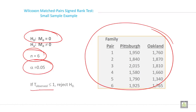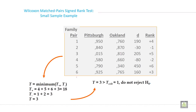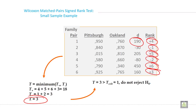So if T-observed is less than or equal to 1, reject the null hypothesis — this is the decision rule. Now calculate d, the difference between the two groups, and then calculate the rank of those differences. Here T is equal to the minimum of T-plus and T-minus. This value is calculated and T is equal to 3. T equals 3 and that is greater than T-critical, which was 1.